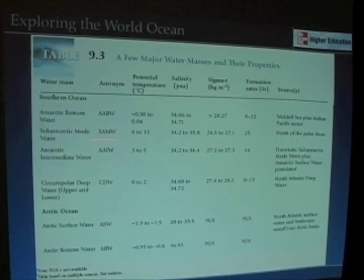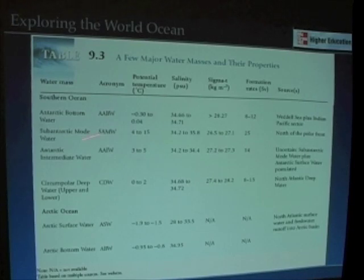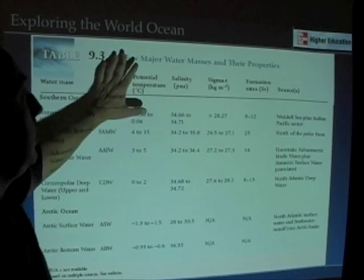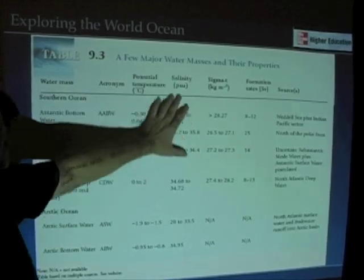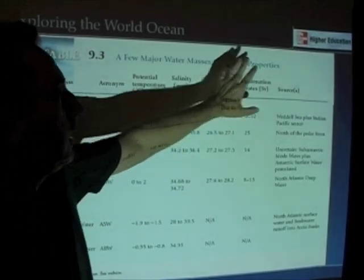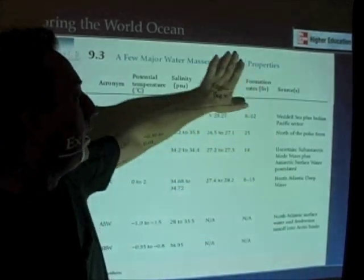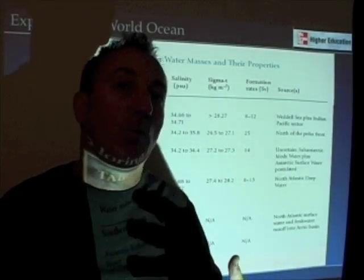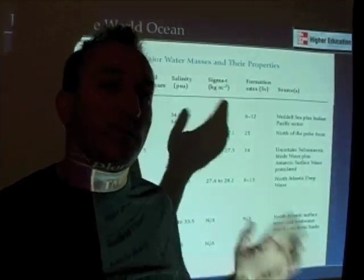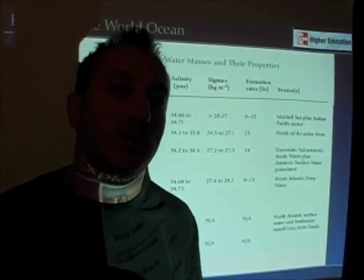Here's some mode water — just an example of a mode water formed in tremendous quantities — and other kinds of water masses that we don't need to pay too much attention to. The key takeaway is that water masses have different characteristics of temperature and salinity, they're formed in different places, and they're formed in different amounts in the world ocean. If you can take away those lessons from this table, then you're a successful oceanography student.